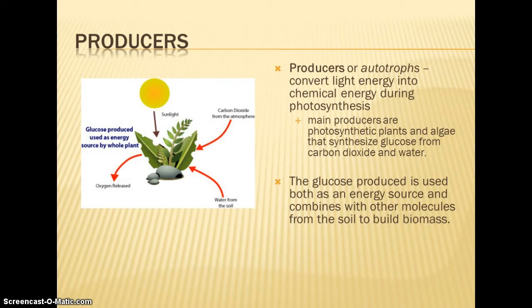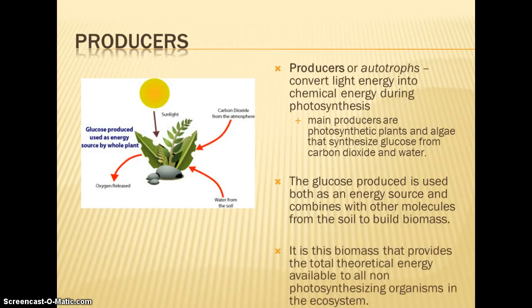The glucose that is produced is an energy source both for the plant itself. It takes nutrients from the soil, uses the glucose, and that's how a plant builds its biomass. That's one of the reasons that we use biomass as a measurement for the primary productivity of an ecosystem. So it's the biomass that provides the energy that's available for the non-photosynthesizing organisms or the rest of the food chain. They're going to consume the biomass of the plant, and that's the energy that they can use and pass forward to the next trophic level.